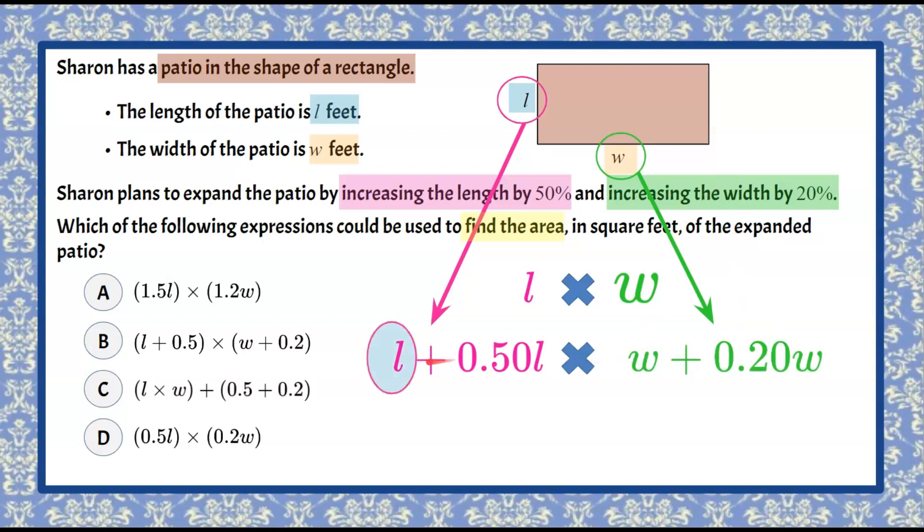So understanding that we have this invisible one in front of the L and then we have like terms, and we have the invisible one in front of the W and now these are like terms.